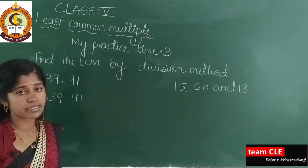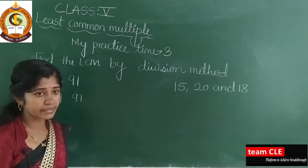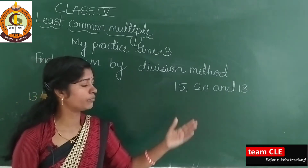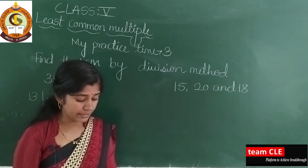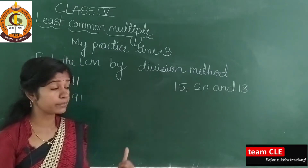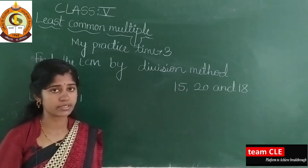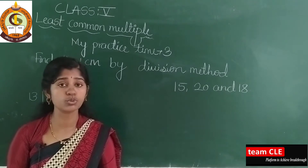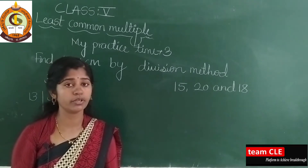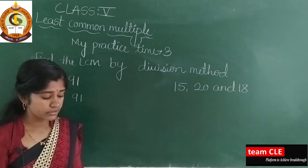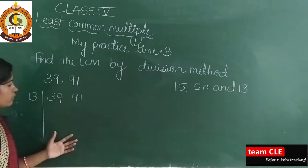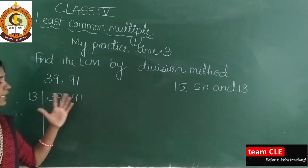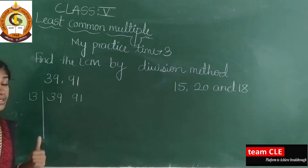I took some examples from your My Practice Time 3: the first is 13 and 91, and here 15, 20 and 18. In your textbook they have given 8 examples; among them I took 2 examples. To solve these examples you need to know tables at least 2 to 20. So let us start today's class. I took here one example: 39 and 91.